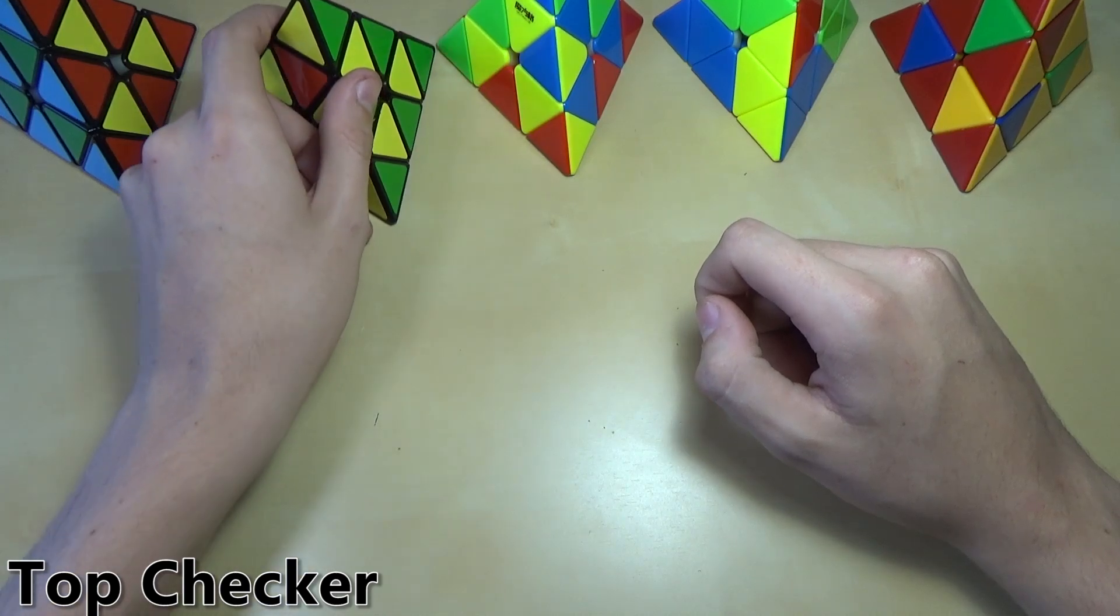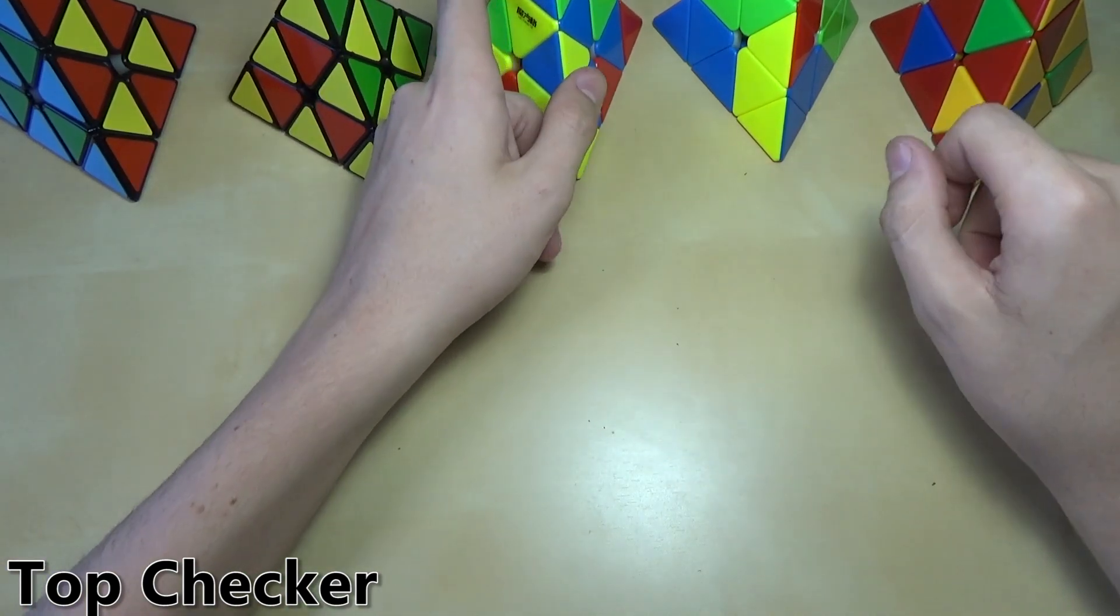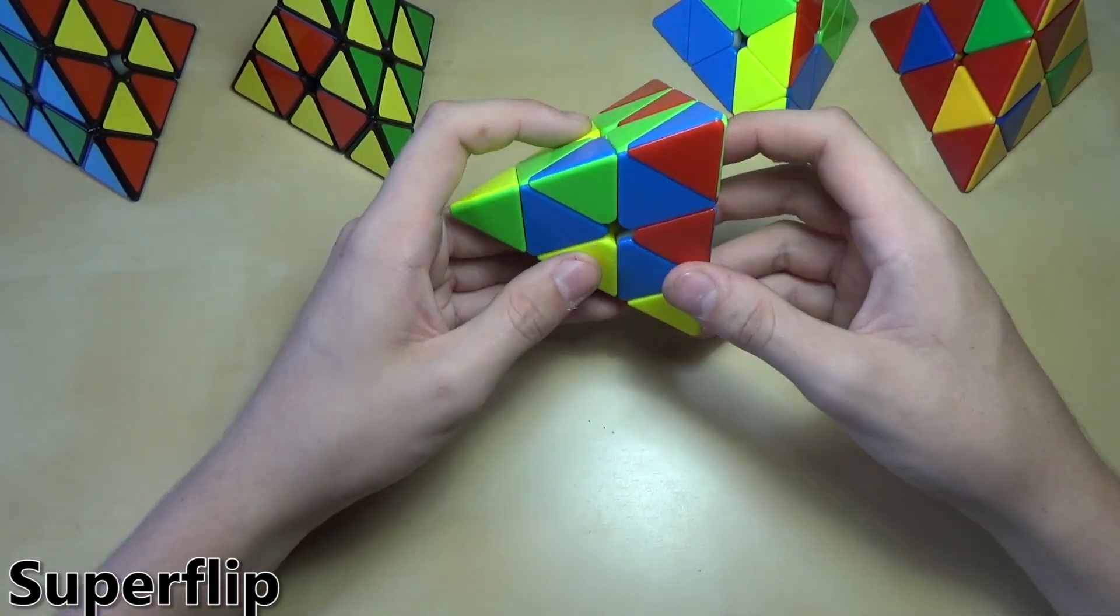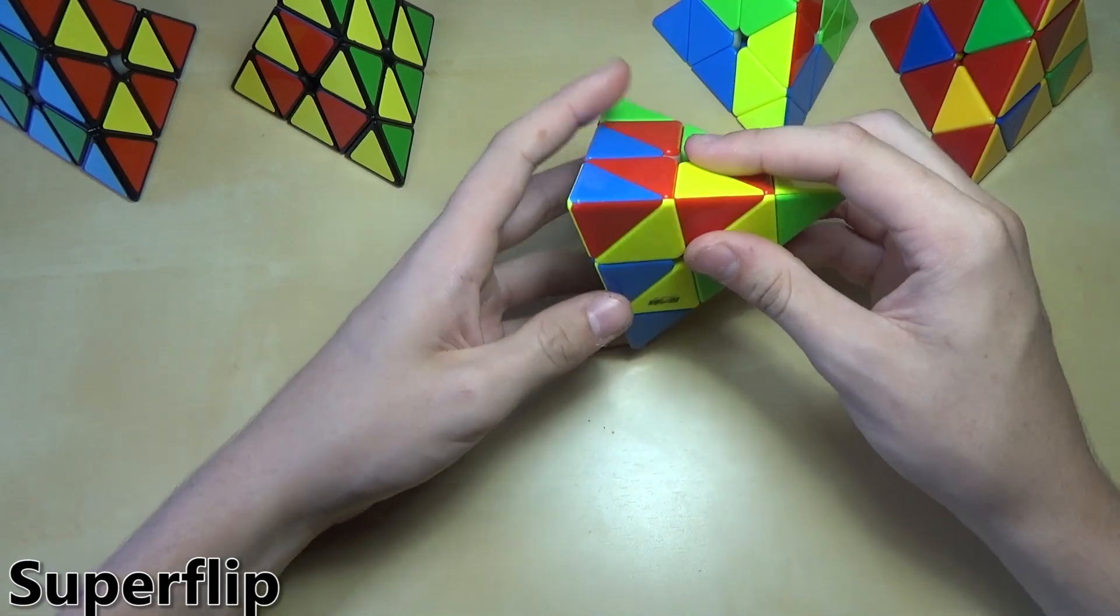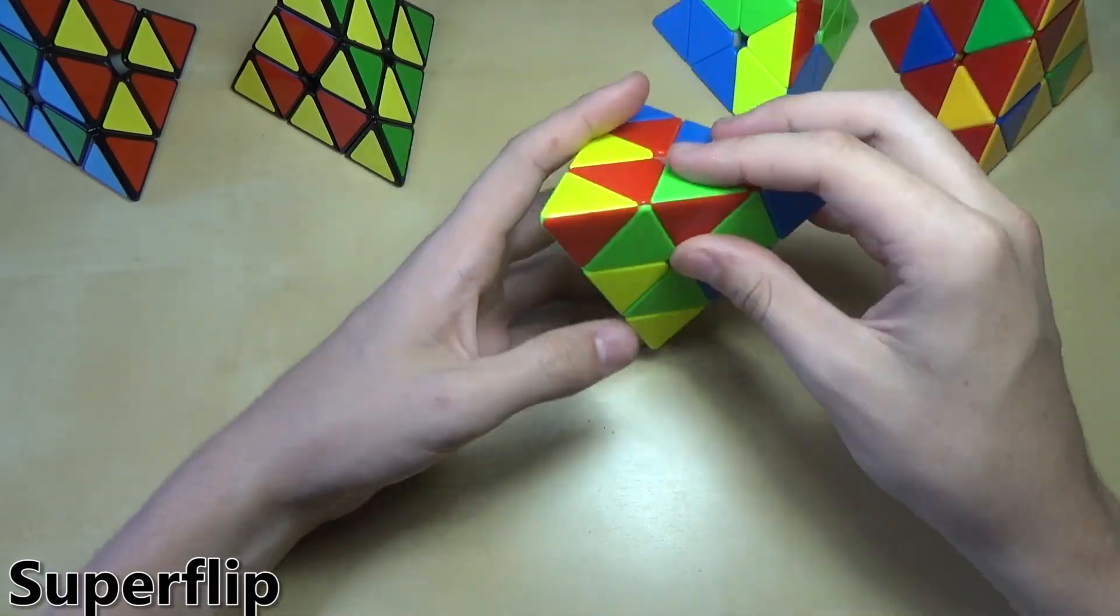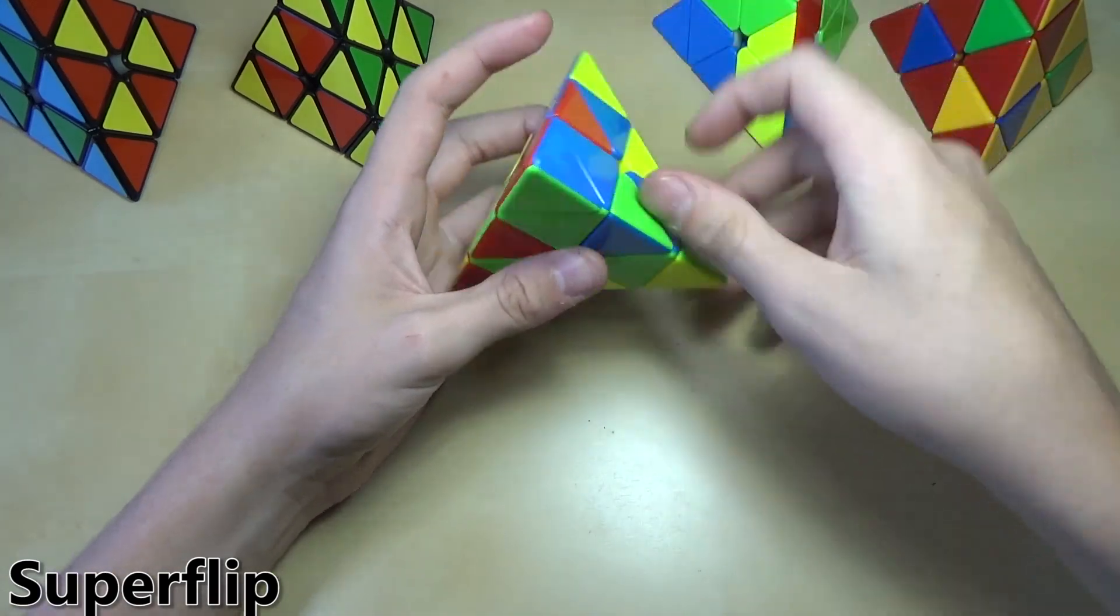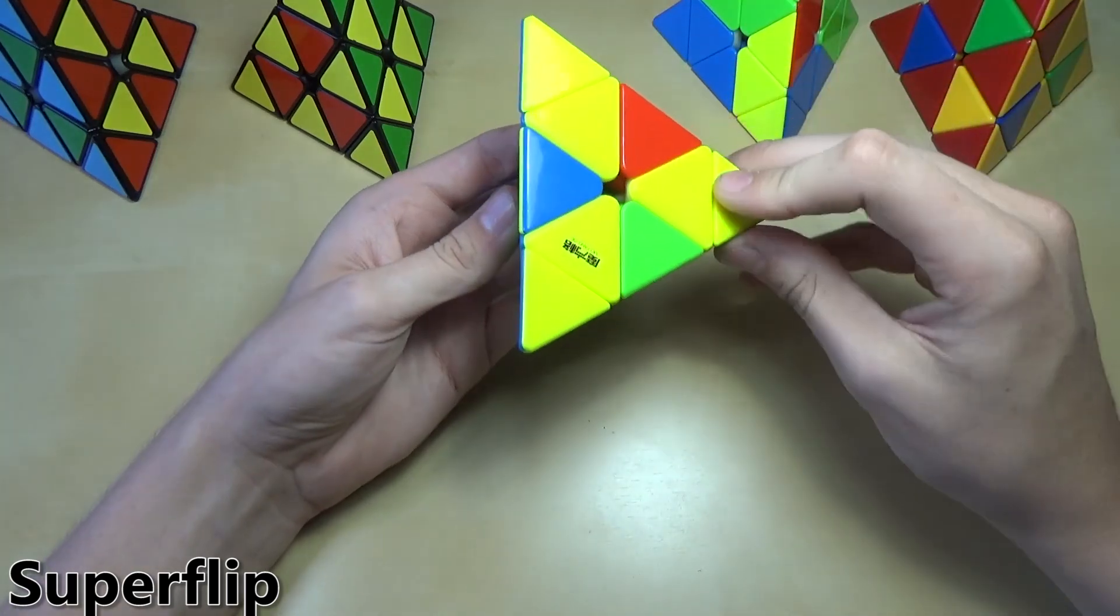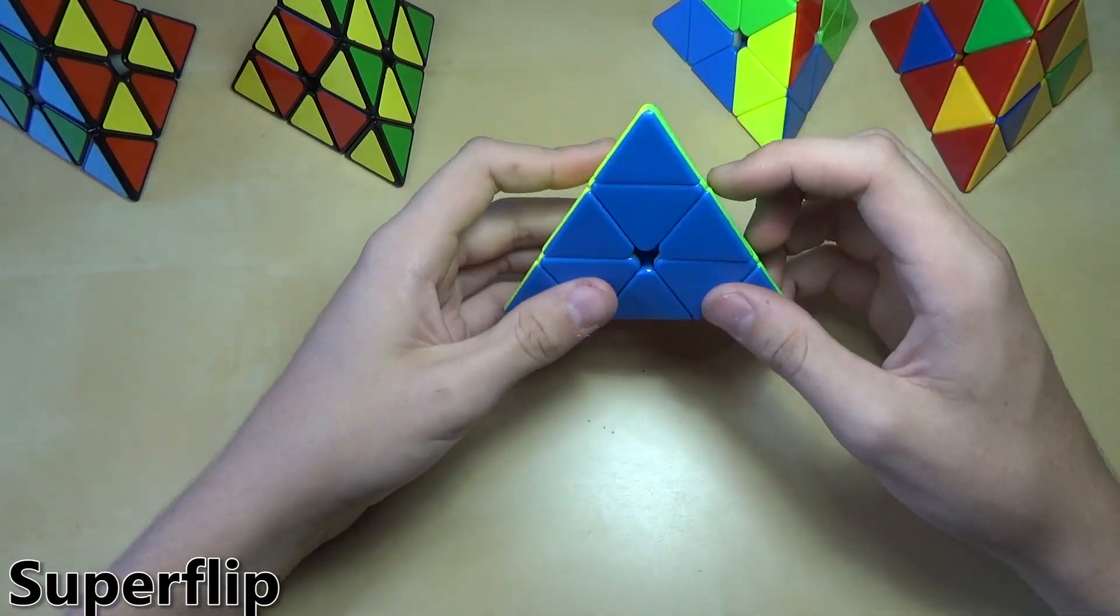For the next pattern, you will not need to take off the tips. Same thing goes with all three of these. This one is the super flip. Basically what this is, is all edges on the cube are just flipped, and these corners are also all just twisted once. This algorithm is probably the easiest one to remember.